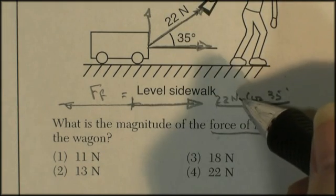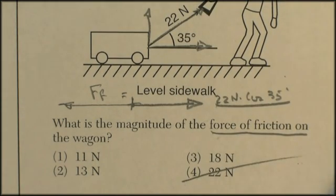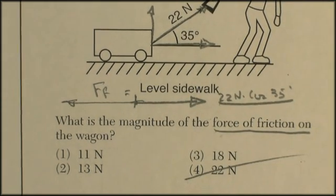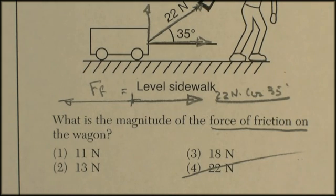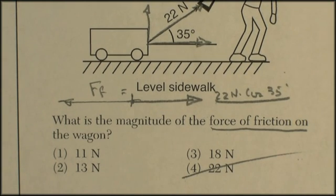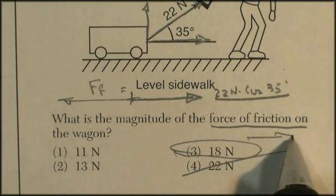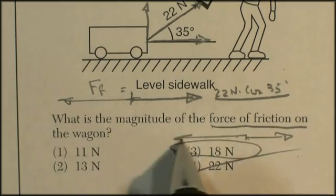So the force of friction is going to be equal to 22 times the cosine of 35. Well, 22 times the cosine of 35 is going to be less than 22. So even if I don't have a fancy calculator, I can still do that. And I just got my calculator out. And the cosine of 35 is 0.81 times 22. I'm getting about 18. So I've got an 18 newton horizontal component. The force of friction has got to be equal to 18 newtons as well.